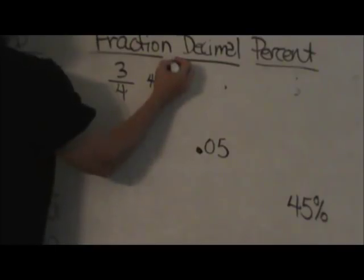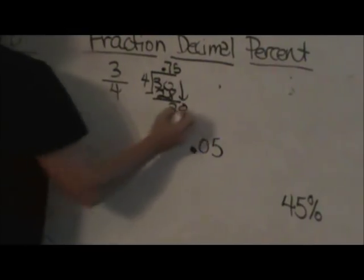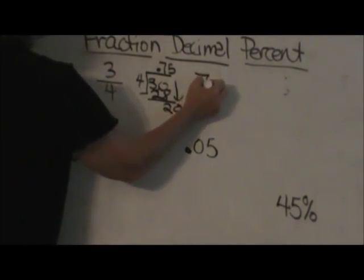Four into thirty goes seven times. Seven times four is twenty-eight. Subtract. Bring down a two and a zero. Four into twenty goes five. So my decimal is .75.